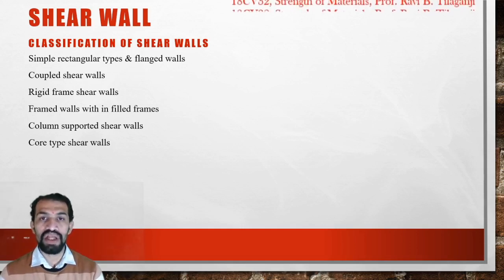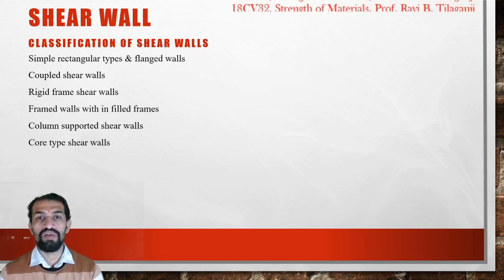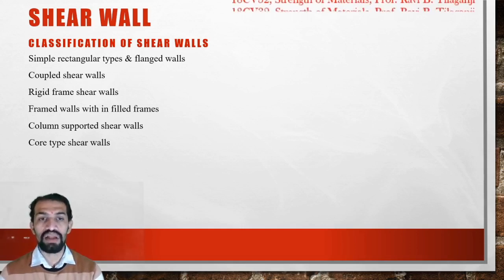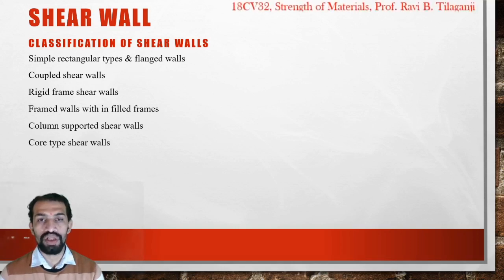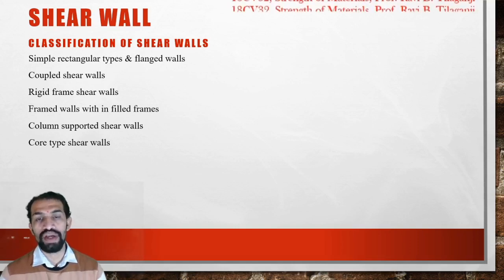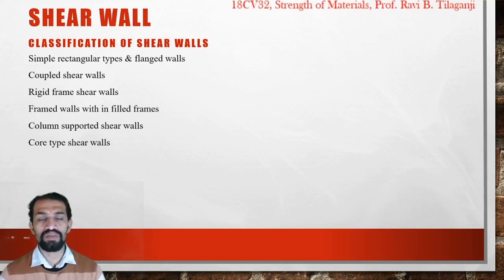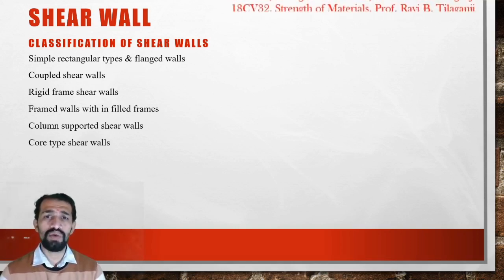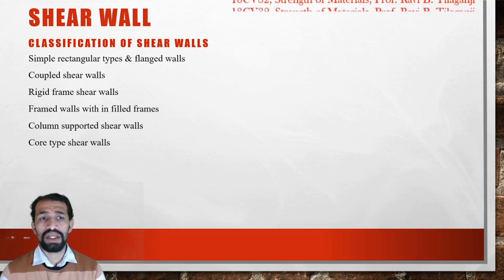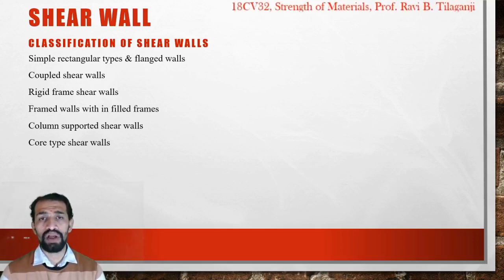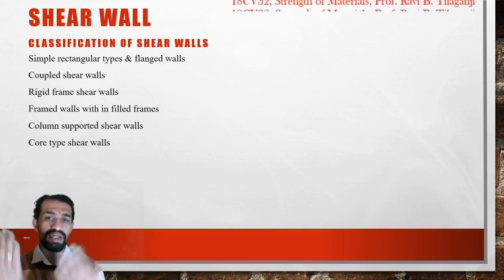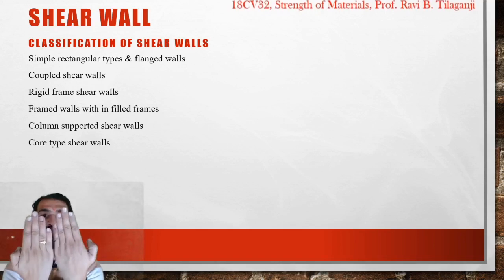Simple rectangular means that will be a box type, and flanged types have supports — similar to what we can say in retaining walls. Coupled shear walls is a type where two particular walls are adjacent to each other in this manner.